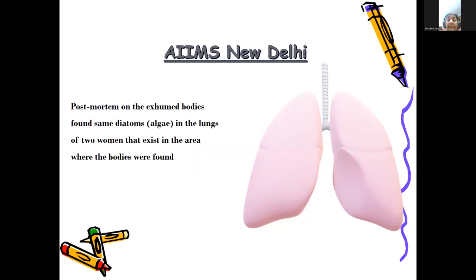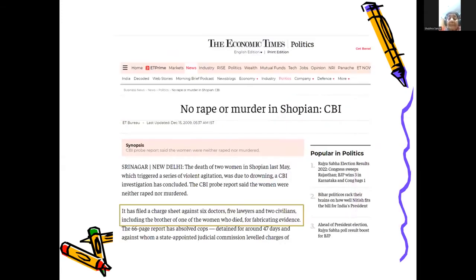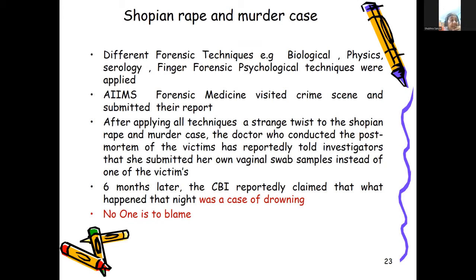Post-mortem on the exhumed bodies found algae in the lungs of the two women that existed in the area where the bodies were found. After CBI's examination, it was established there was no rape or murder in the Sofian case. There was a violent agitation. After CBI examination, a charge was filed against six doctors, five players, and two civilians, including the brother of one of the women who died, for fabricating evidence. It was clear this was not a case of sexual assault — no murder, nothing.